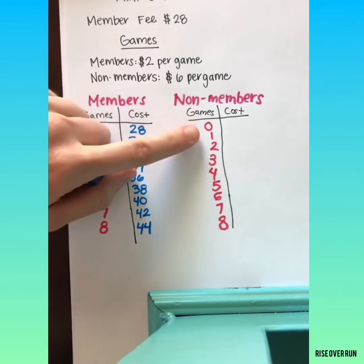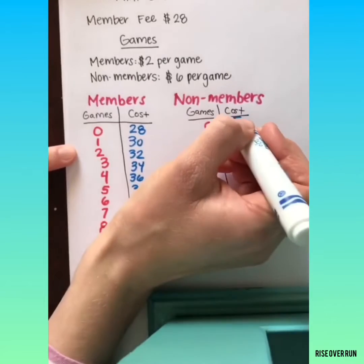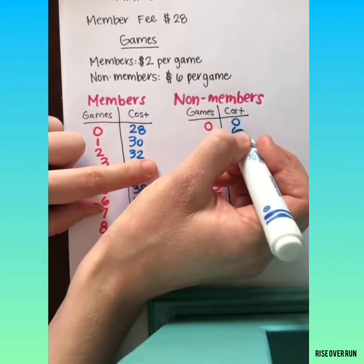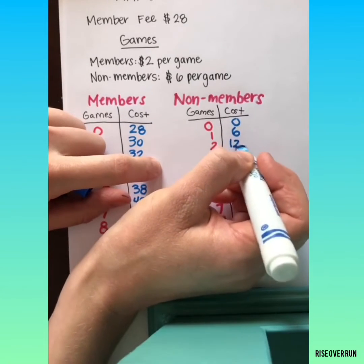Now let's look at non-members. Non-members who don't play any games have no cost. But if they play one game, they pay $6. And then we can keep adding $6.